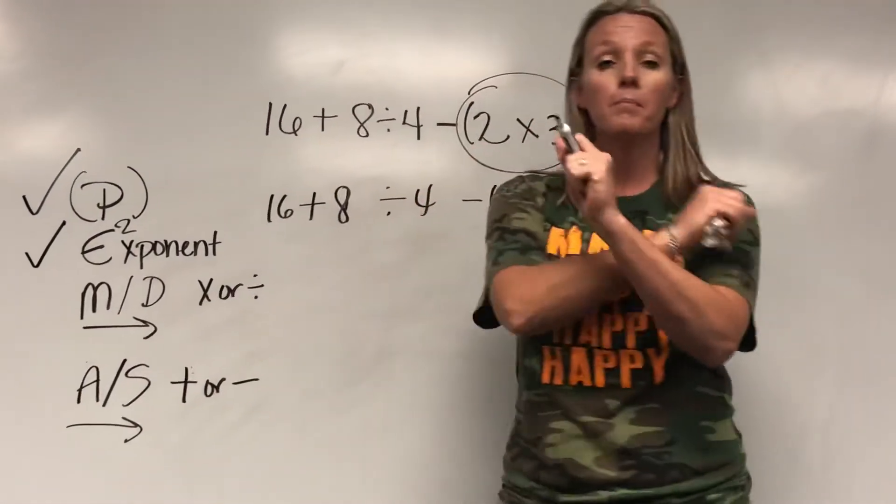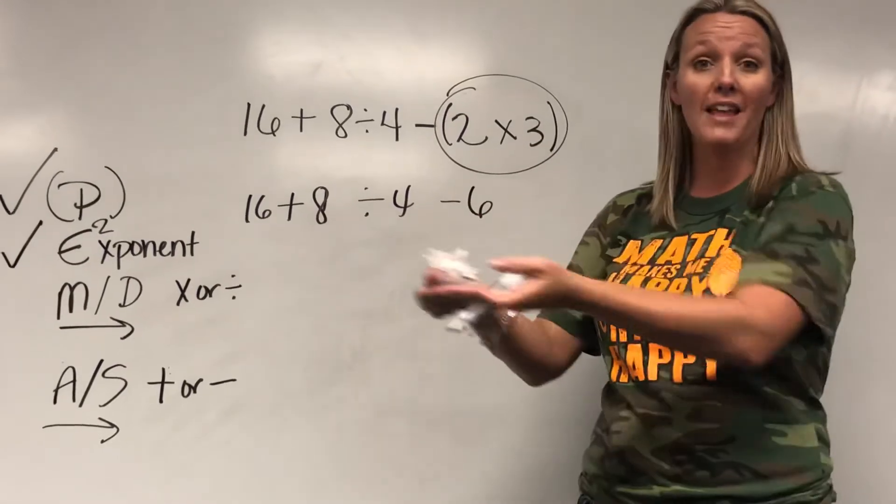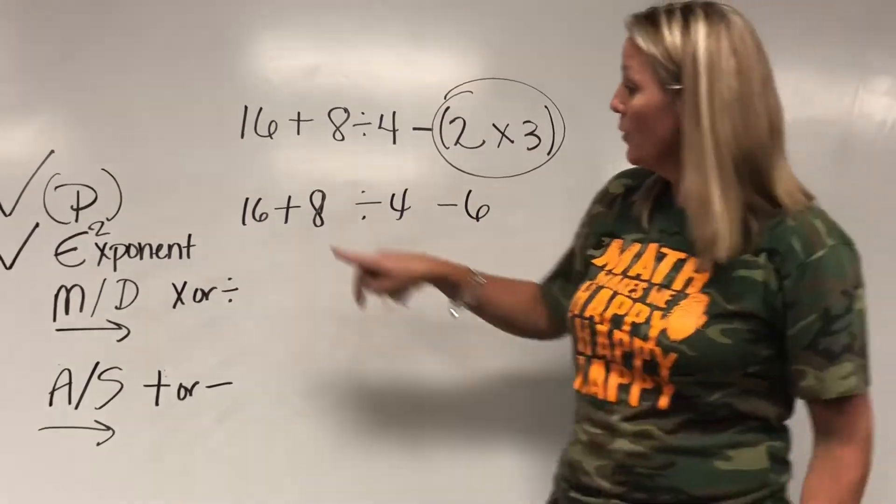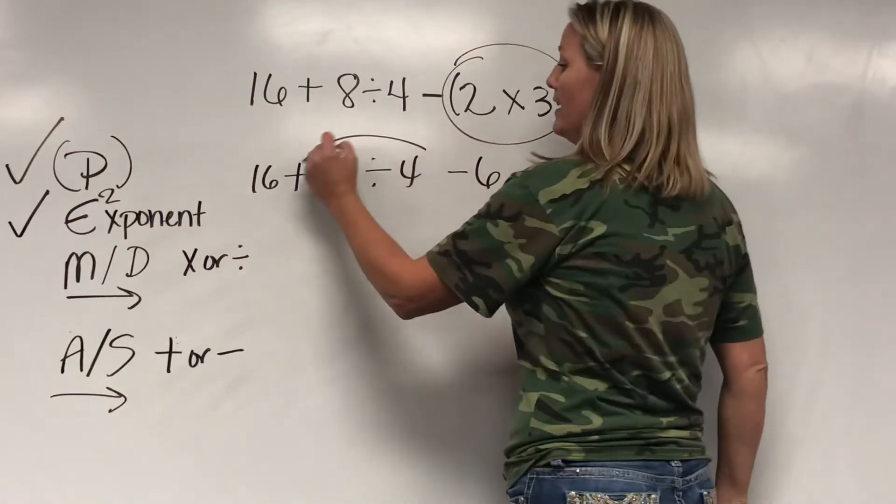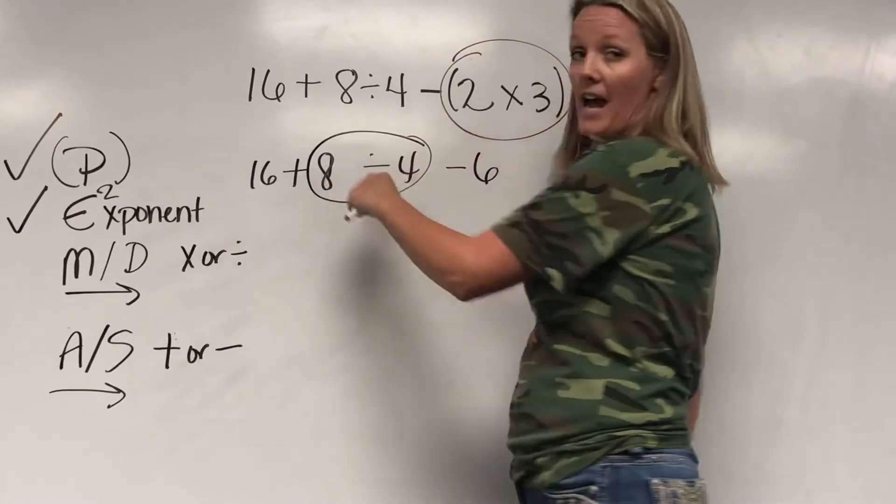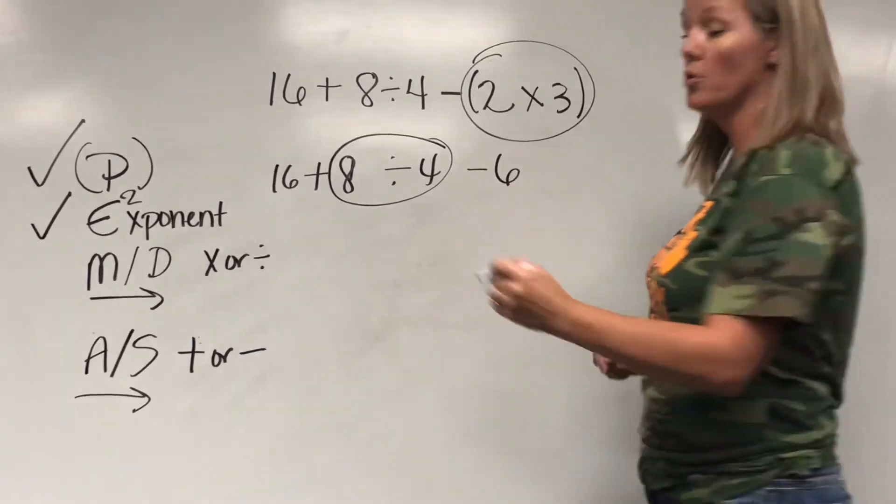The next step, multiply or divide from left to right as I'm reading it. I do see division. So I'm going to circle that, and I'm going to solve what's attached to the division problem. Eight divided by four is two.